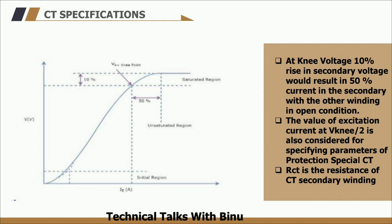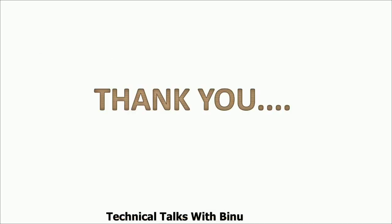The next CT is the neutral CT, rated 300/5A, class 1P10, and rated for 20% of the rated secondary current. This was all about the nameplate details of a transformer. In the next video, I will be detailing about the materials and components used in a transformer along with the losses in a transformer.